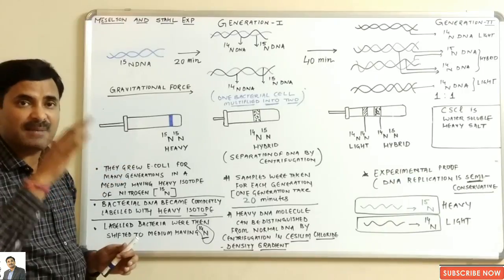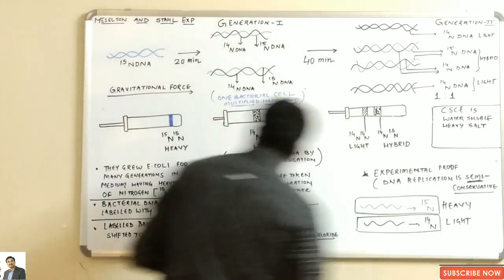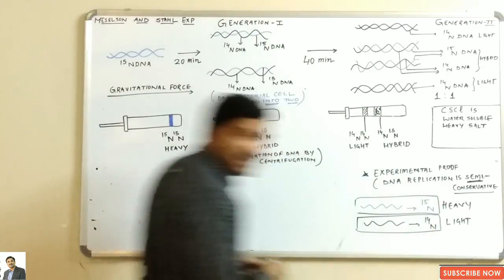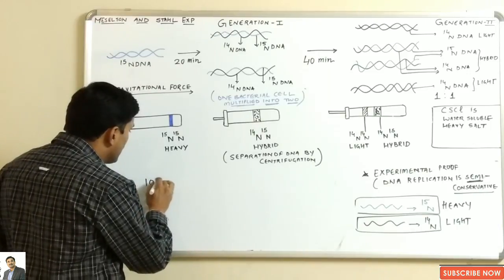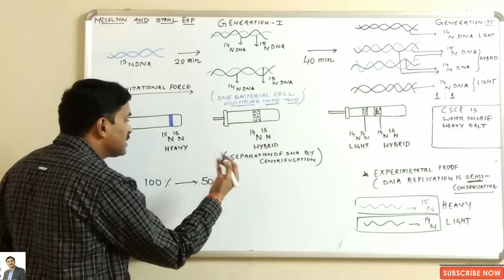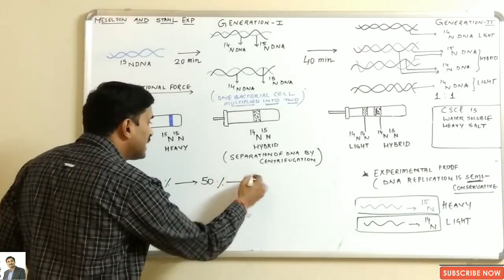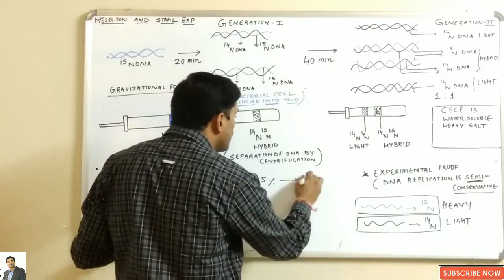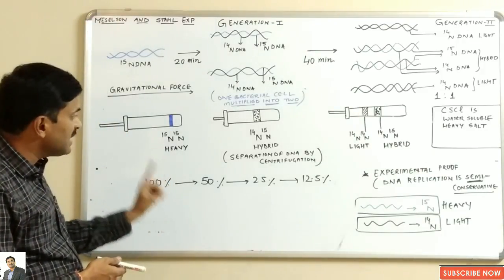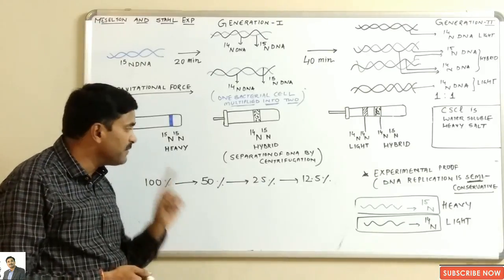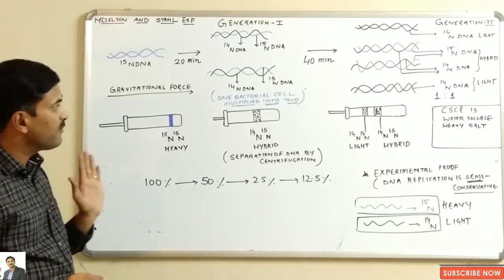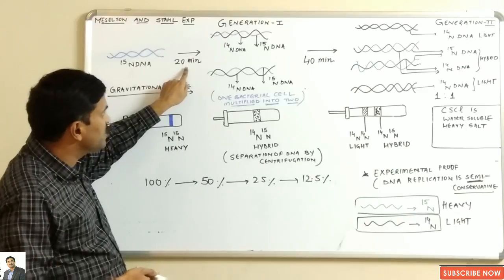In the Meselson and Stahl experiment, three types of DNA can be distinguished by cesium chloride density gradient: heavy DNA at the bottom, hybrid DNA in the middle, and light DNA at the top. The key concept is that in each generation, 50% of the DNA from the previous generation is conserved — starting at 100%, then 50%, then 25%, then 12.5%.